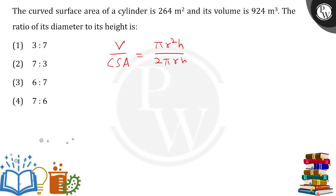They want diameter by height. They have given us the numerical value 924 upon 264. This will be π cancelling out π, r cancelling r, and h cancels out h.